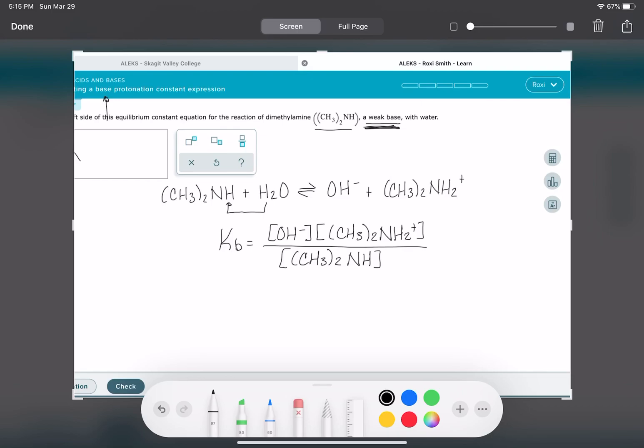And the KB for this is product OH-, other product CH3, 2, NH2+, over the reactant CH3, 2, NH. Make sure you have square brackets. Make sure you have charges. Make sure you have everything superscript, subscript correctly. And that's all this is asking.